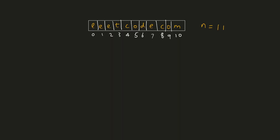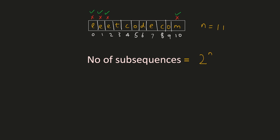Let's use the same word from a previous example and try to understand how we create subsequences from a given word. In any subsequence, for each character we have two choices — whether to include that character or not. For example, we have two choices for the 0th character whether to include it or not. Similarly, we have two choices for characters 1, 2, and so on for all remaining characters. Hence, the total number of subsequences that can be formed is 2 raised to the power n.